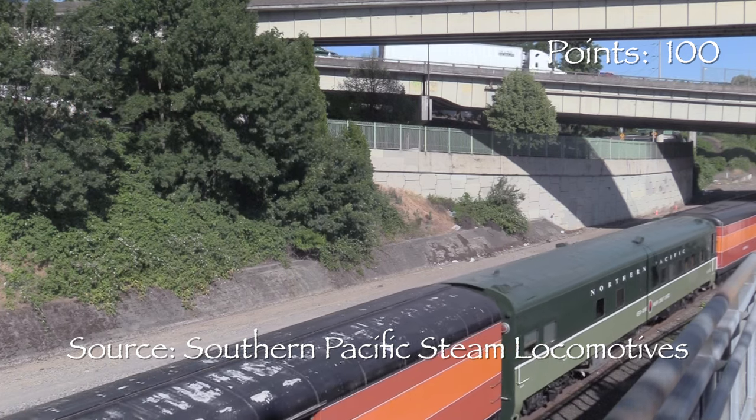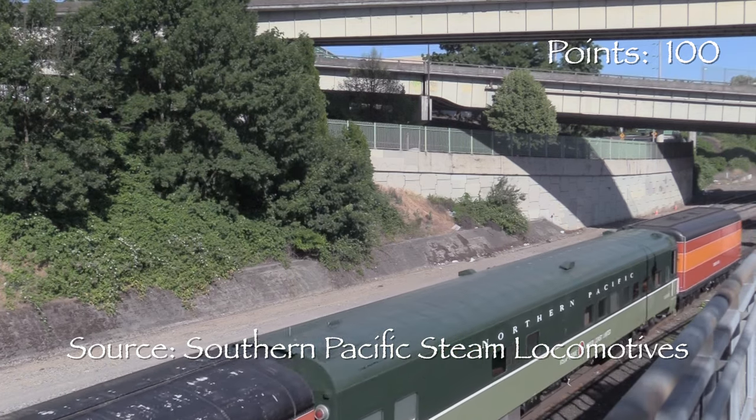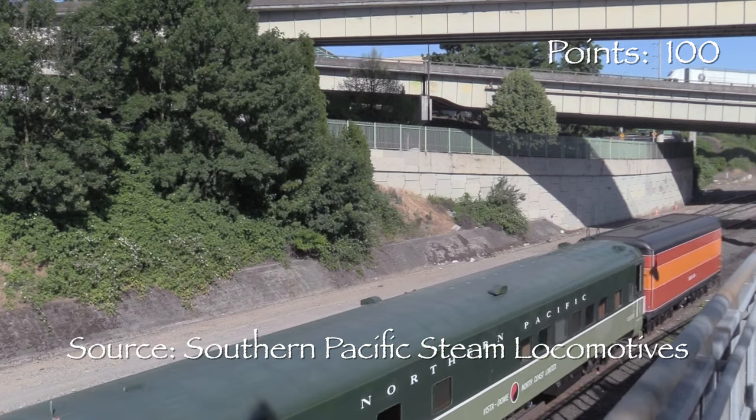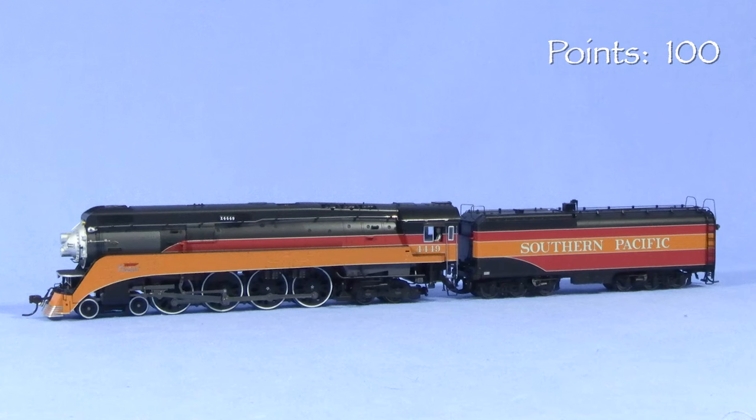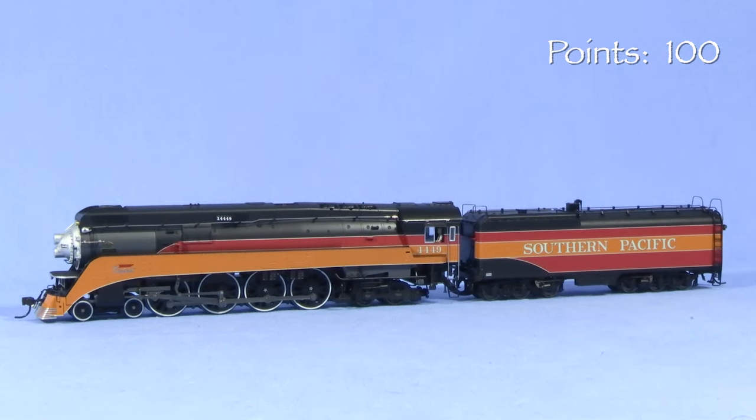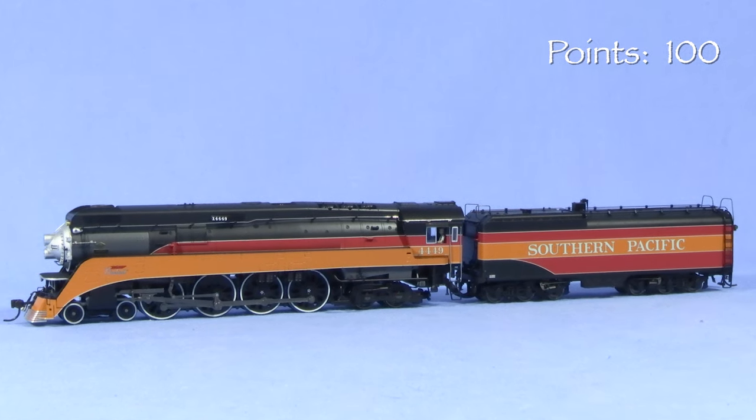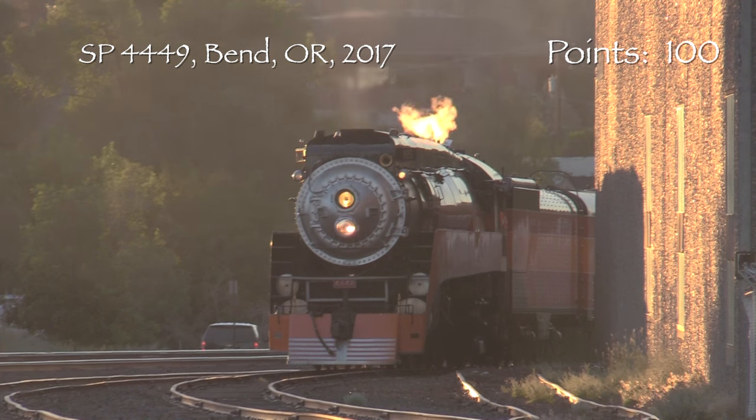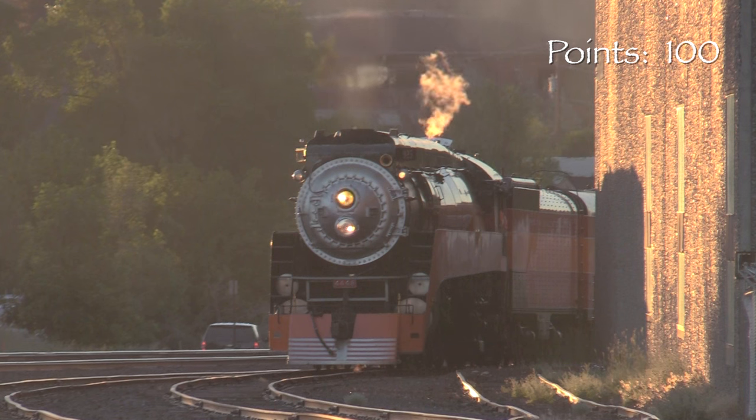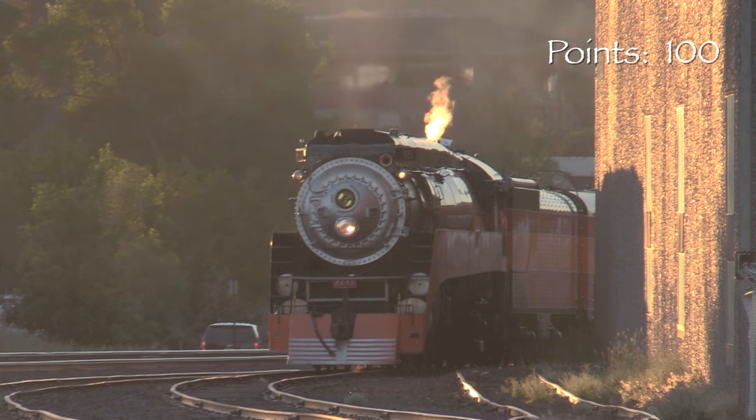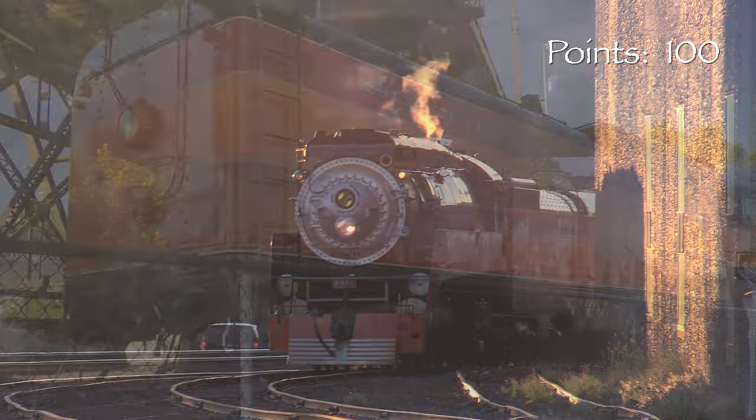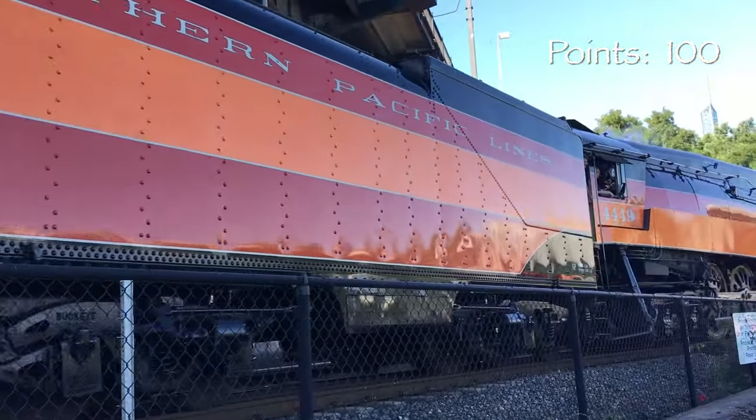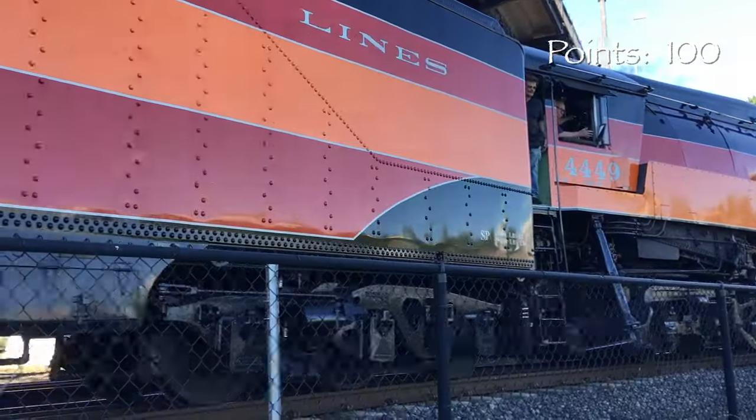GS stood for general service or golden state, depending on the source of the information. SP's non-streamlined GS1 4-8-4s were built by Baldwin in 1930. Subsequent GS locomotives were built by Lima. The GS2 and GS3 classes were semi-streamlined but built with a single nose headlight. The GS4 was the first class with the dual headlights in front. They also had enclosed cabs. These were numbered 4430 to 4457. 4458 and 4459 had roller bearings and were class GS5 but otherwise looked similar to the GS4s. 4449 is the only preserved example of the GS1 through 5 classes of locomotives.